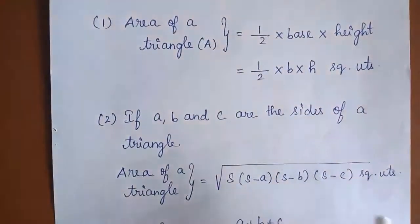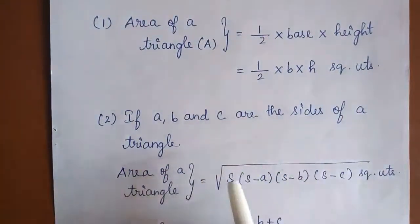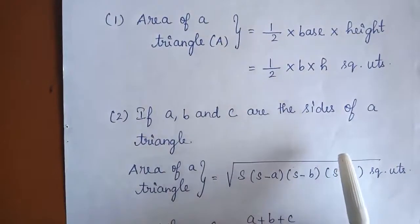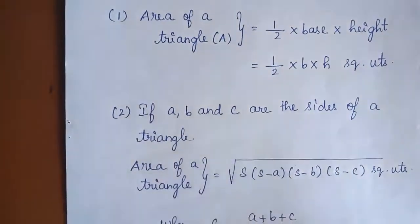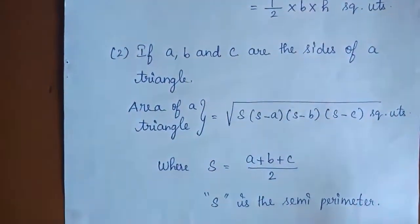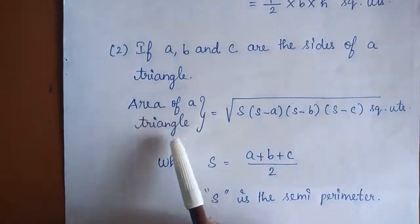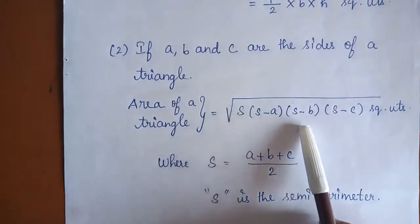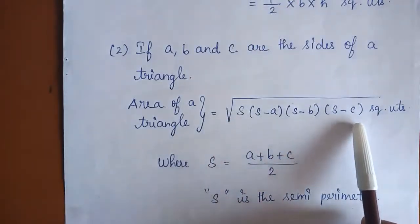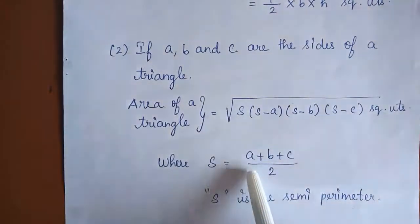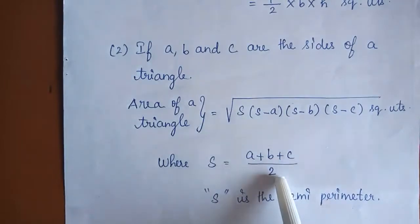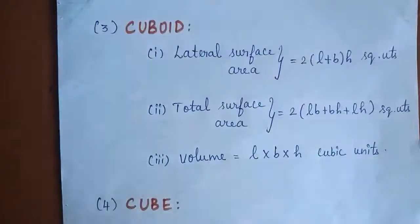Formula 2: If A, B, and C are the sides of a triangle and we do not know the base and height — only the side values are given — we use Heron's formula. Area of a triangle is equal to root of S into (S minus A) into (S minus B) into (S minus C) square units, where S is equal to (A plus B plus C) divided by 2. Here S is the semi-perimeter of the triangle.